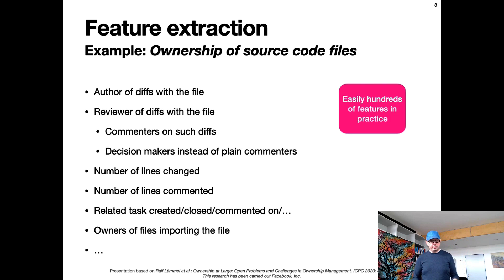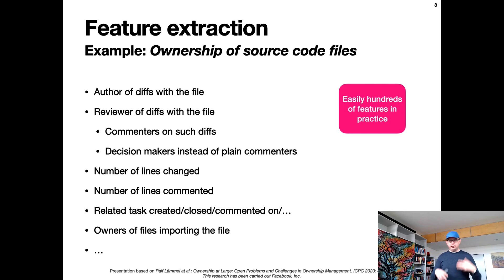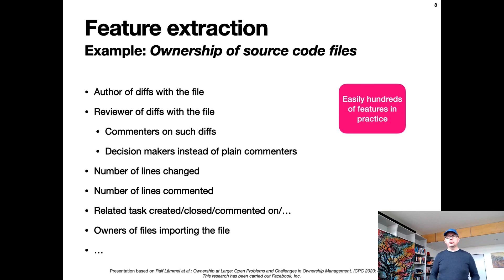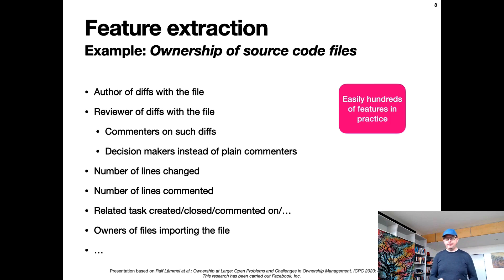Number of lines changed — if I change more lines in a file, maybe I have a stronger ownership. If I comment on more lines, maybe it's a stronger sign. If I'm involved with tasks or bugs created around the diff — if I create or close an issue, or comment on it — that might also be an ownership signal. If I'm actually importing a file a lot in my own code, and assuming we know the owner of that code, then that code importing this file might also be an ownership signal. In practice, you might easily end up with hundreds of raw features this way, especially accounting for the timeline.